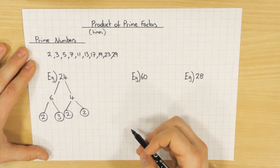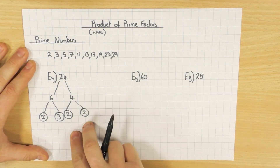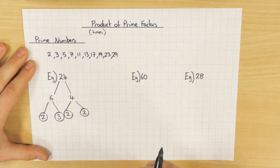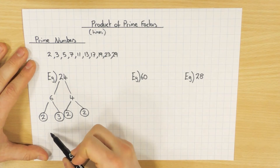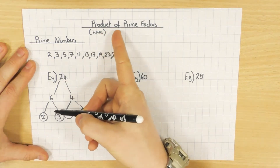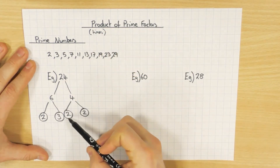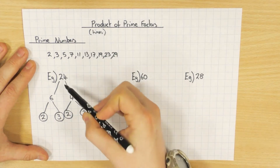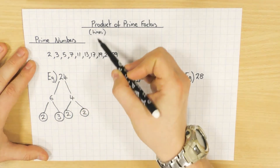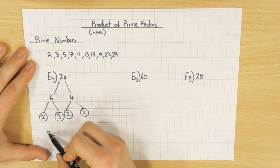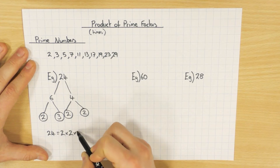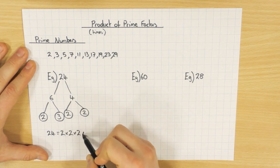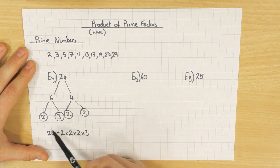Also, 2 is the only even prime number. Once you've done that, that's your working — that gets you marks — but it doesn't get you full marks, because what you need to do now is write it as a product of prime factors. These are all prime numbers and they're all factors of 24. So if we now times them together: 24 equals 2 times 2 times 2 times 3. This is now your answer.